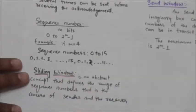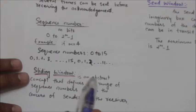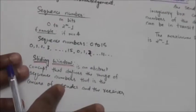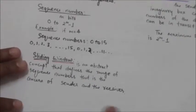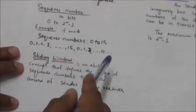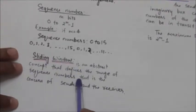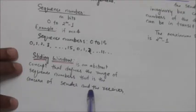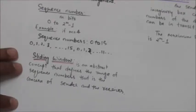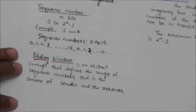In this protocol we must know about a term called sliding window. It is a sliding window protocol, so we must know what is this sliding window. The sliding window is an abstract concept that defines the range of sequence numbers that is the concern of sender and the receiver. The range of sequence numbers which is the concern of the sender is called the send sliding window, and the range of sequence numbers which is the concern of the receiver is called the receive sliding window.